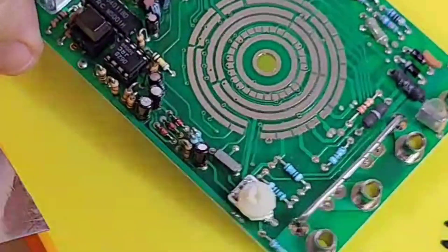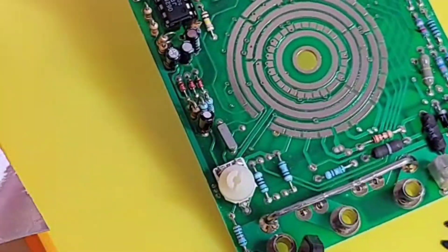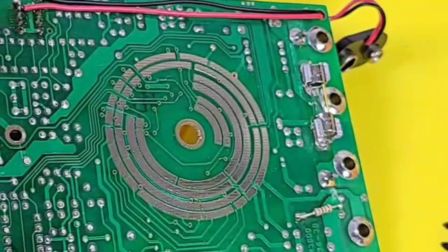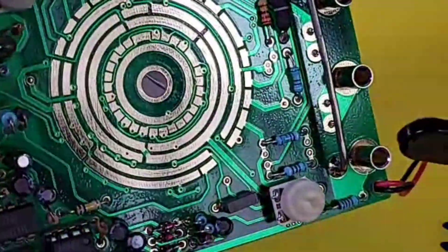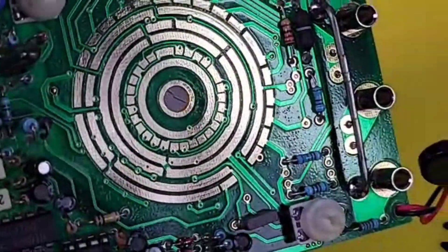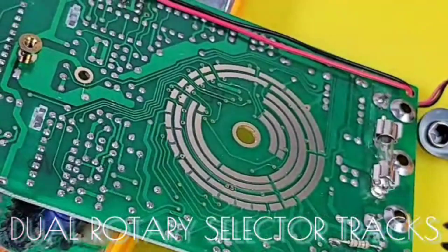Something else kind of unique is the fact we have not one, but two rotary selector tracks on the multimeter. Yeah, so they weren't messing around back in the day.